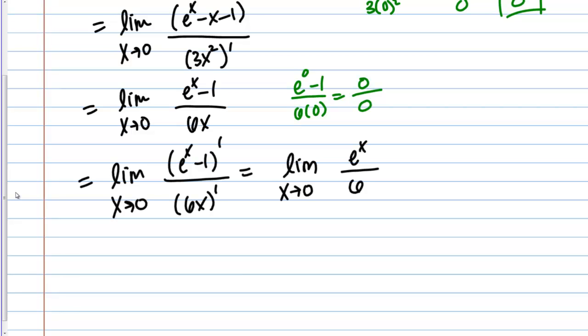Now what happens if I plug in 0? If I plug in 0 now, I no longer get an indeterminate form. I just get a number. E to the 0 is 1 and then I have 6. I finally found the answer to this limit which is 1 sixth.